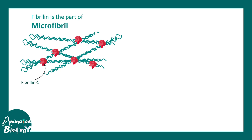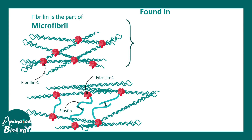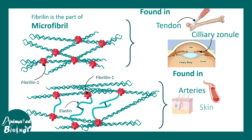Many of these microfibrils are present in different tissues — they could be present alone or in combination with elastin, giving extra flexibility and stretchability. Microfibrils alone are found in tendons and ciliary zonules of the eye, while microfibrils combined with elastin are found in arteries, skin, lungs, and more. When fibrillin-1 is mutated, all these biological aspects where fibrillin plays a role are affected.